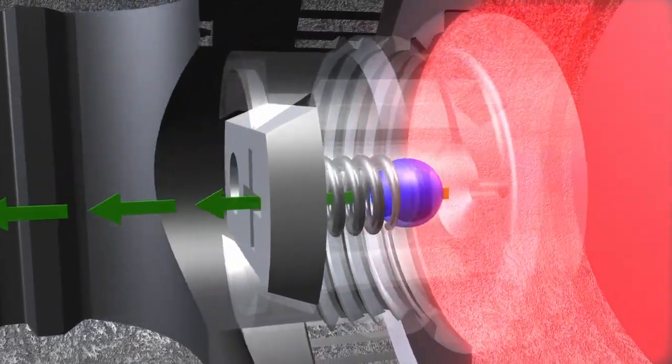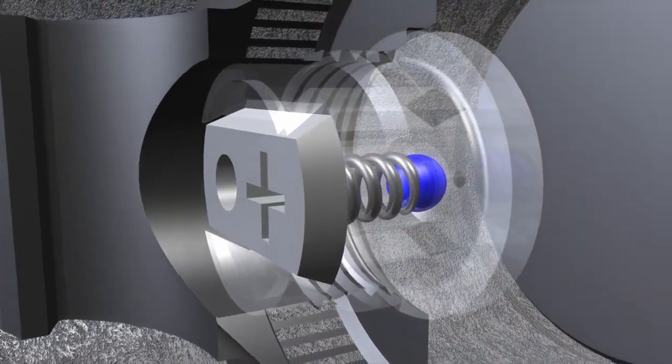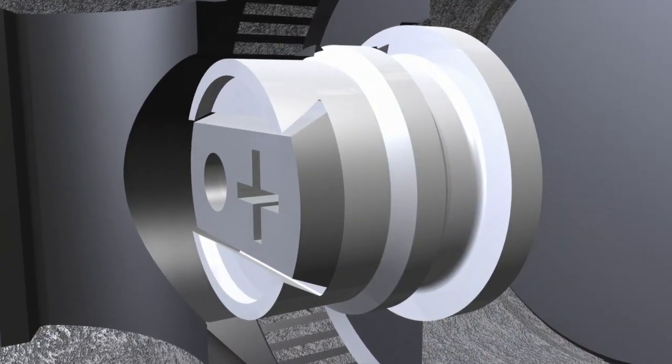Once normal pressures are achieved, the pressure relief valve is no longer active, but ready for the next time the closer is abused.